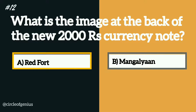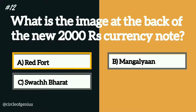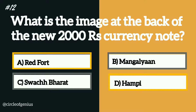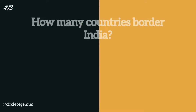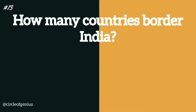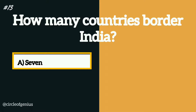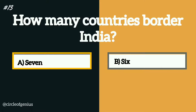The correct answer is option B, Mangalyaan. Question number thirteen: how many countries border India? Option A: 7, B: 6, C: 5, D: 8.